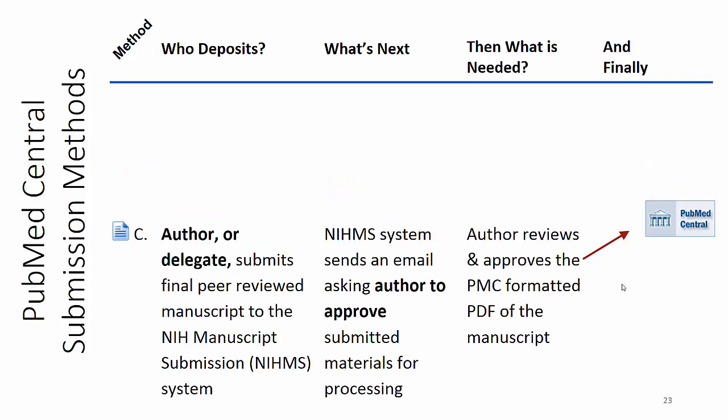Method C — we'll spend a little more time with this one. The author or their delegate submits the final peer-reviewed manuscript through the NIH manuscript system. The NIH system will send to the author, who's tagged as the reviewer, an email saying this has been submitted — go make sure this is what it should be. Then there's a conversion process, and the reviewer will have to go back in and make sure that the conversion of the manuscript to a PDF and to the PMC website is as expected, including the supplemental material, and then it gets into PubMed Central.